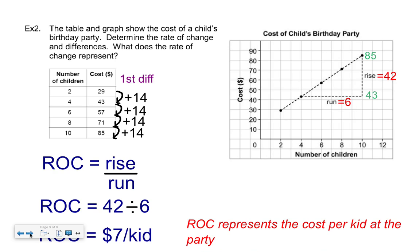The table and graph show the cost of a child's birthday party. Determine the rate of change and first differences, and explain what the rate of change represents. I did the first differences and found it goes up by 14 each time — 29 to 43 is going up by 14. Now you might be tempted to say the rate of change must be 14, based on what I told you last time, but that doesn't work here.